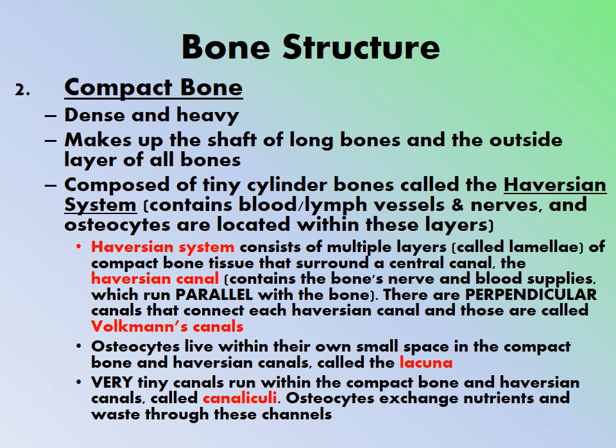The other type is compact bone, which is dense and heavy. It makes up the shaft of long bones and the outside layer of all bones. Compact bone is composed of tiny cylindrical units called the Haversian system, which contains blood vessels, lymph vessels, and nerves. Osteocytes are located within these layers — 'osteo' meaning bone, 'cyte' meaning cell. The Haversian system consists of multiple layers of compact bone tissue surrounding a central canal called the Haversian canal, which runs parallel with the bone.